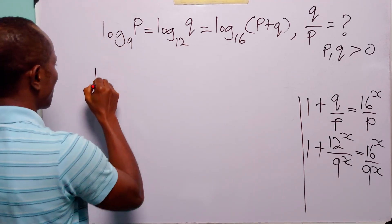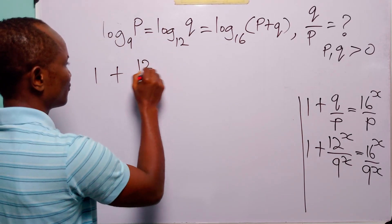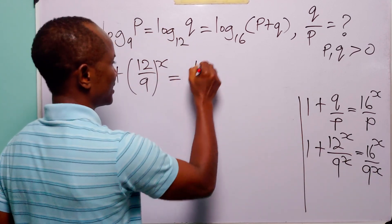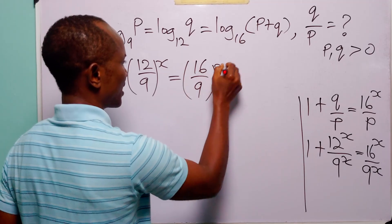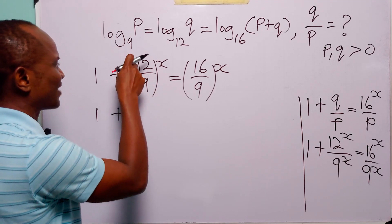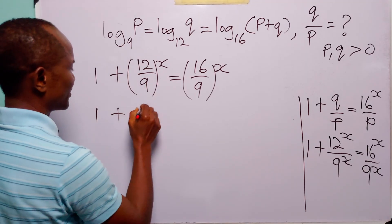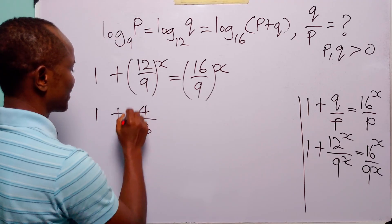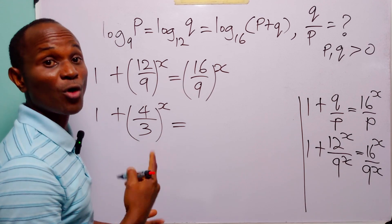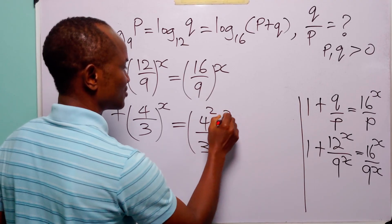From here we have 1 plus — since these two numbers have the same exponent, we can write them as 12 over 9 to the power X, and this is equal to 16 over 9 to the power X. We can reduce this fraction by dividing numerator and denominator by 3: 12 divided by 3 is 4, and 9 divided by 3 is 3, raised to power X. Notice that 16 is 4 squared and 9 is 3 squared, raised to power X.